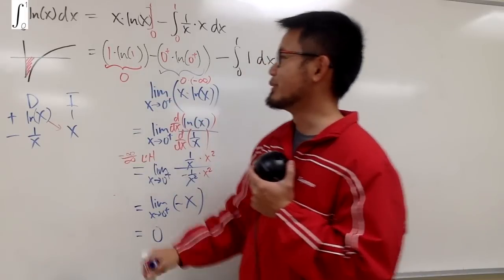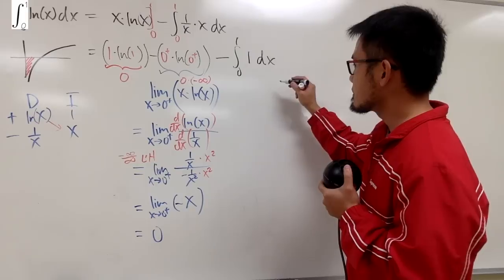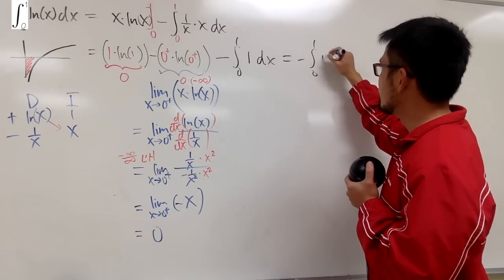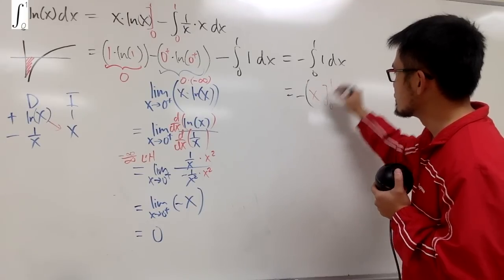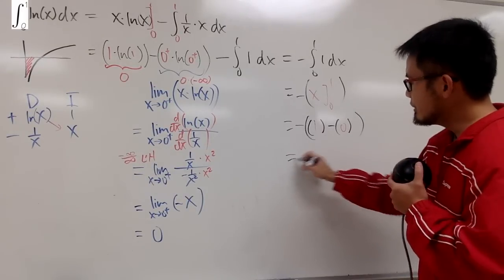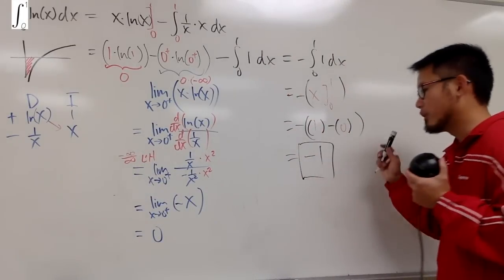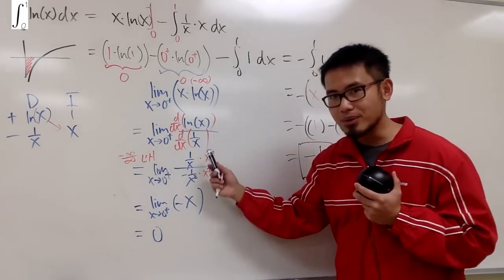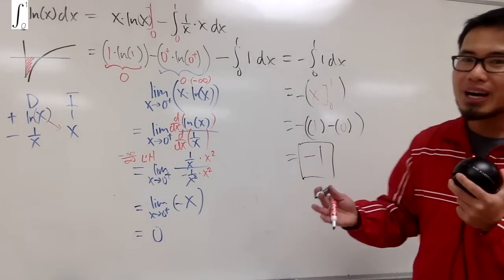This part is also 0 because of ln(1). Now I just have to worry about this part, the negative integral from 0 to 1 of 1 dx, which is just negative x evaluated from 0 to 1. Keep the negative on the outside, plug in 1, then subtract 0. You end up with negative 1 for the final answer. So the integral from 0 to 1 of ln(x) dx equals -1. We solved this using integration by parts with the DI setup and L'Hopital's rule. However, there is an easier way. Let's welcome Oon Han for the second method.